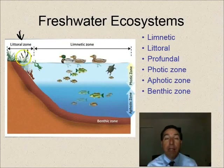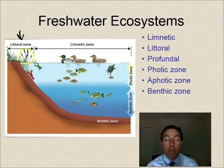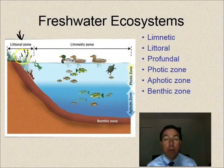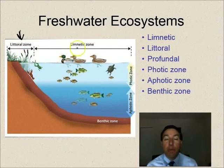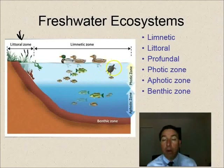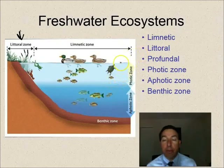The first zone is the littoral zone — where the water meets the shore. In this zone there is high light and lots of plants growing both in and emerging out of the water, such as cattails and lily pads. Animals found here include alligators, frogs, and many insects. The littoral zone in a pond or lake is usually the most diverse zone. Further from shore is the limnetic zone — the open surface water area where phytoplankton and zooplankton live, along with fish and other animals.